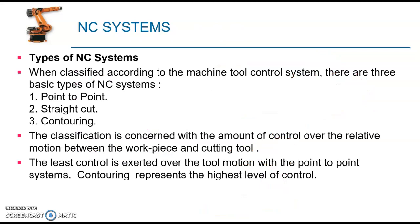Now we are discussing the types of NC systems. Types of NC systems are primarily classified into three based on the level of control of the workpiece or the tool. One is point-to-point, second one is straight cut, and three is contouring. Point-to-point has the minimum level of control or the least level of control, and contouring has the highest level of control.